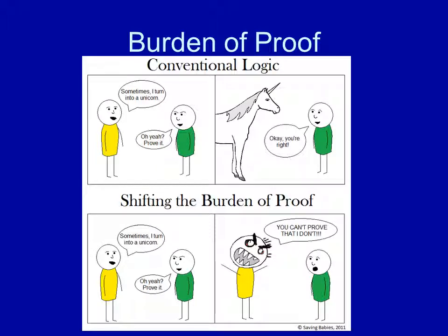Here's a fun little comic. In the top panel, the guy in yellow says, 'Sometimes I turn into a unicorn.' The guy in green says, 'Oh yeah, prove it.' The guy in yellow turns into a unicorn, and the guy in green says, 'Okay, you're right.' That is typically the case — whoever is making the claim has the burden of proof. The bottom panel illustrates shifting the burden: 'Sometimes I turn into a unicorn.' 'Oh yeah, prove it.' 'You can't prove that I don't.' The guy in green is left dumbfounded because it is not his job to prove he can't turn into a unicorn. Whoever is making the claim has to prove the claim.